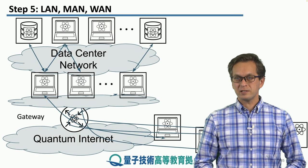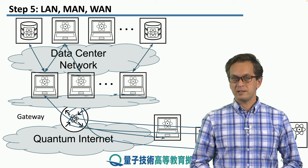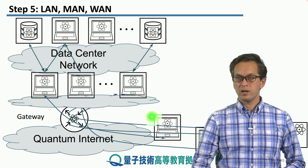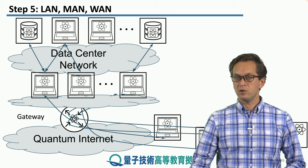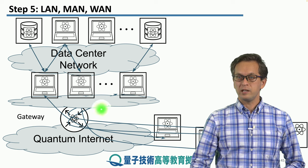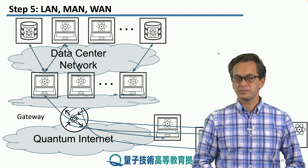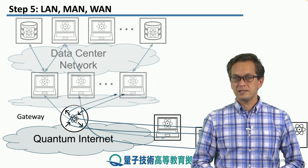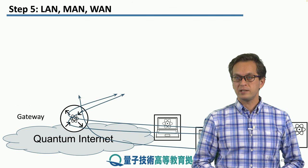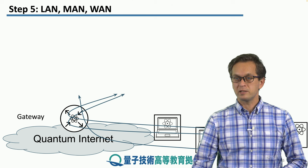In the previous step we considered how clients connect through the quantum internet to our quantum data center network. Over here we have a few quantum computational nodes or a sensor node, all connecting via the gateway router to the front-end servers of the quantum data center network. In this step we're going to take the quantum data center network away and really concentrate on this bit over here.